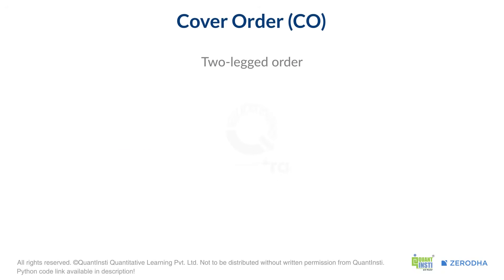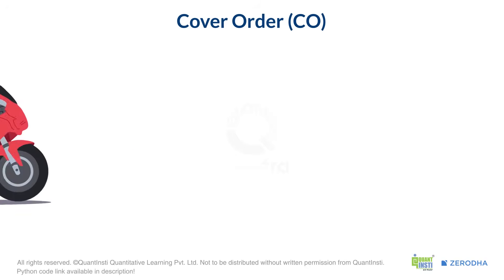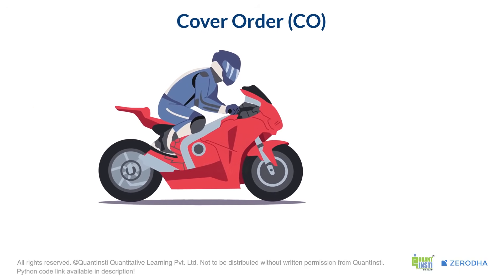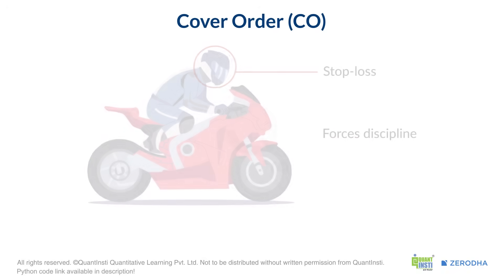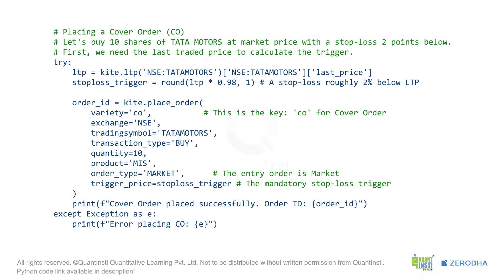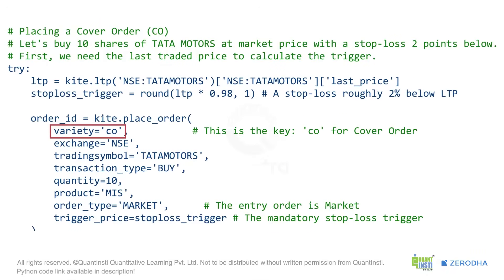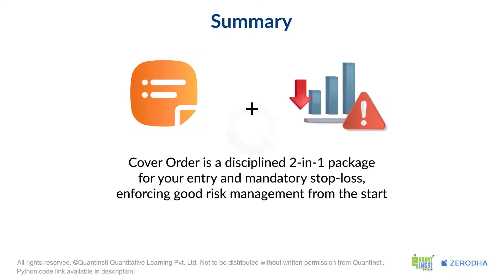A cover order, or CO, is a two-legged order. It combines your initial entry order — which can be a market or limit order — and a compulsory stop loss order. Think of it as buying a ticket to a high-speed race and the organizers tell you that you must wear a helmet. The stop loss is your helmet — it's not optional. This forces trading discipline: you cannot place a cover order without defining your exit point for a loss. Placing a cover order is very straightforward. The main difference is we need to set the variety parameter to CO and provide a trigger price for our mandatory stop loss. By setting variety to CO, we've told the broker to create that two-legged order. Once our buy order executes, a sell stop loss order will be automatically waiting. The cover order is a disciplined two-in-one package for your entry and mandatory stop loss, enforcing good risk management from the start.